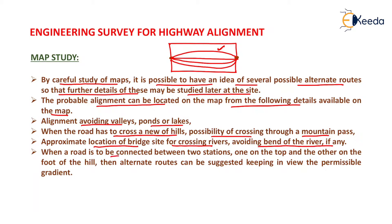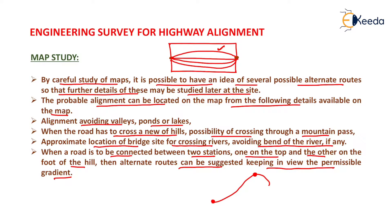When a road is to be connected between two stations — one on the top and the other at the foot of the hill — alternate routes can be suggested keeping in view the permissible gradient. While suggesting alternate routes for connecting these two points, we have to keep the permissible gradient within the permissible range so that it will not exceed the pulling power of the vehicle.